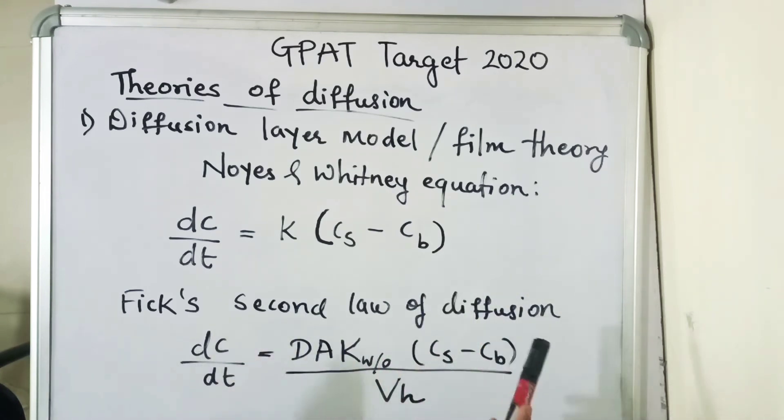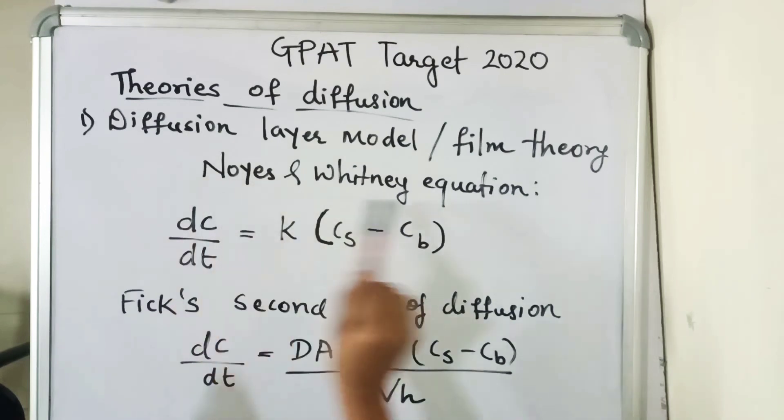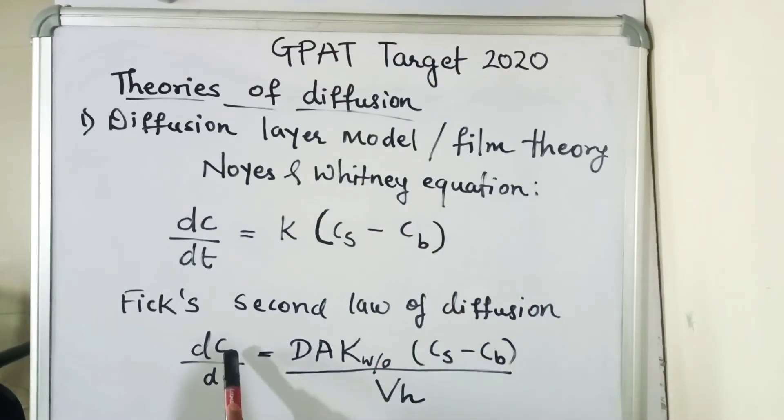Fick's second law: Noyes and Brunner incorporated Fick's first law of diffusion and modified the Noyes-Whitney equation to give dc/dt equals DAKw/o over Vh times (cs minus cb), where dc/dt is the dissolution rate, D is the diffusion coefficient, A is the surface area of dissolving solid, Kw/o is the partition coefficient, V is the volume of dissolution medium, H is the thickness of the stagnant layer, and cs minus cb are the concentration gradient for diffusion.